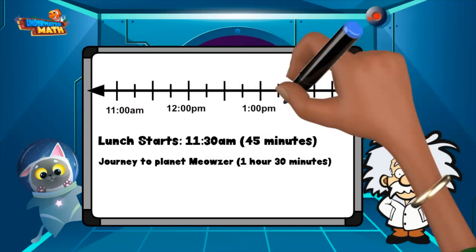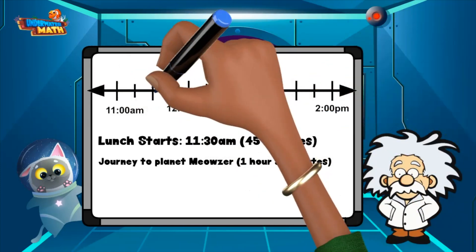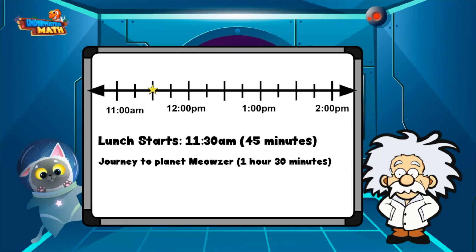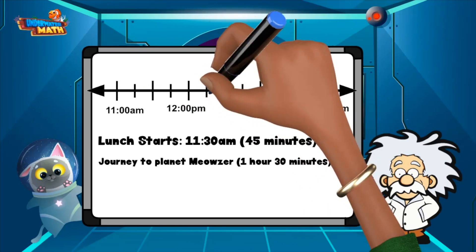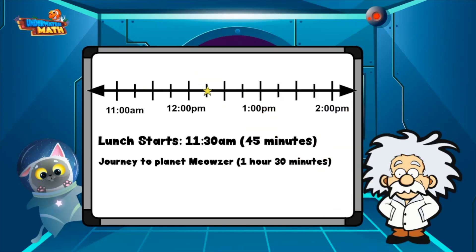Let's use a number line to help us. We will start here at 11:30 and first make a 45-minute jump. Each tick mark is worth 15 minutes, so I need to move three tick marks. This lands on 12:15 PM.